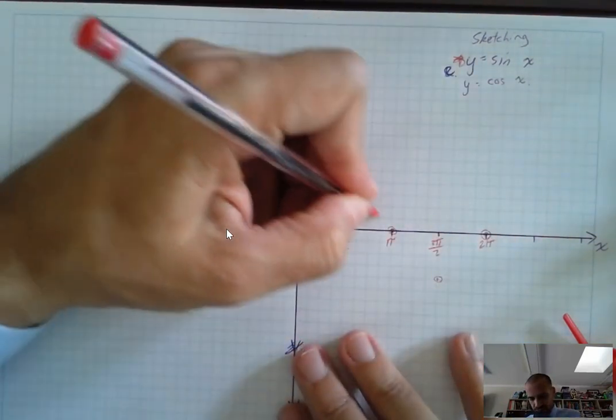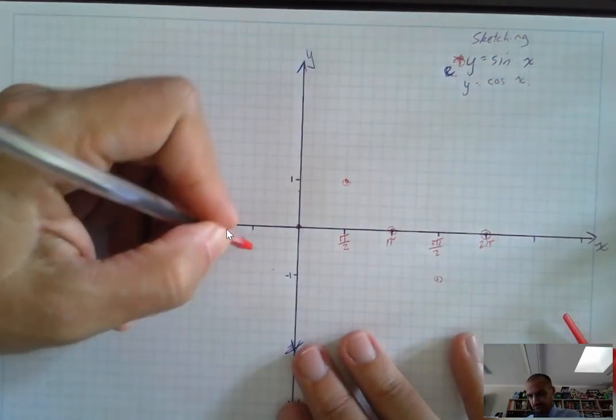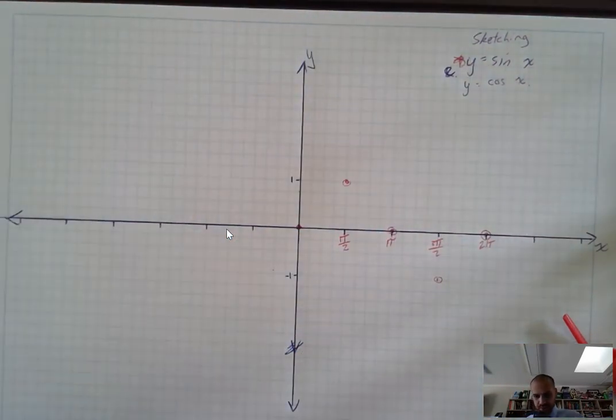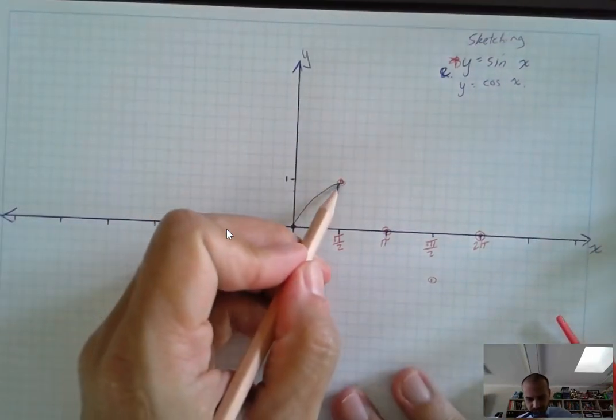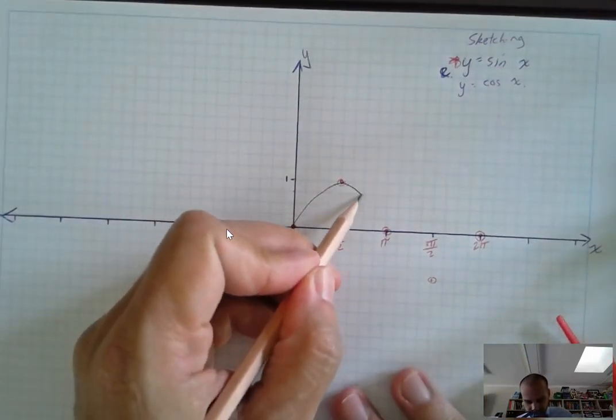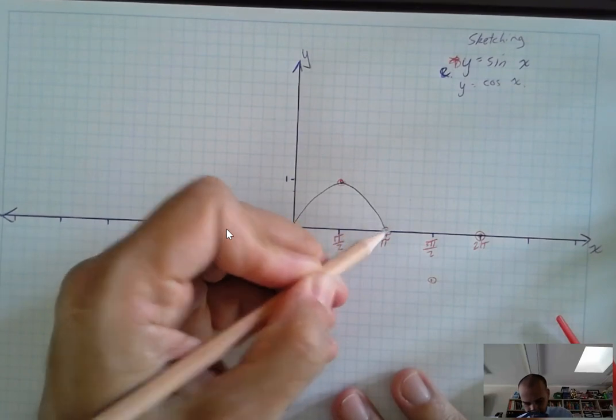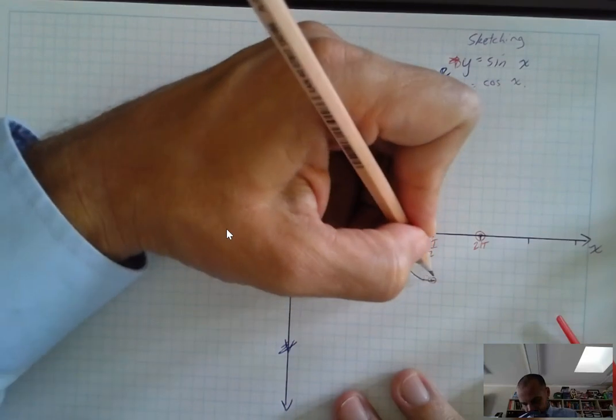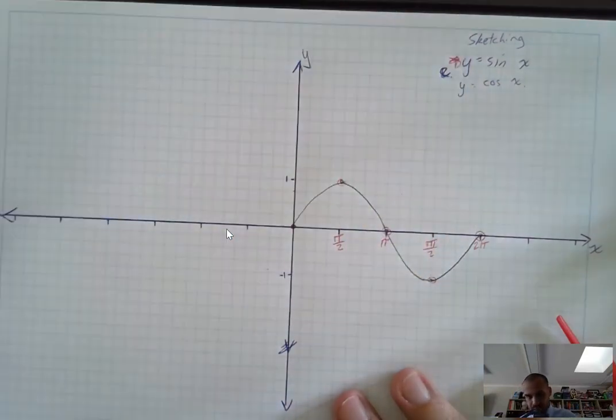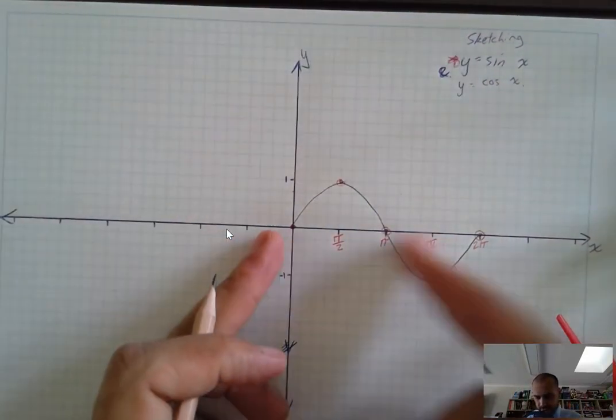And now I try to sketch it as fluidly as possible. I might use a pencil to begin with and see if I can get it right. Sort of straight, it sort of evens out when it gets to the top there. Sort of evens out a bit here like that. Okay. And that's from zero to two pi.